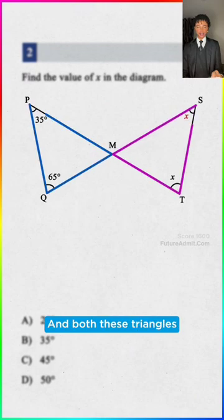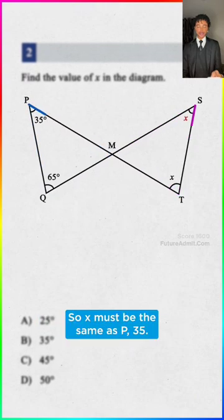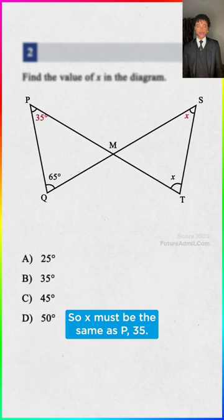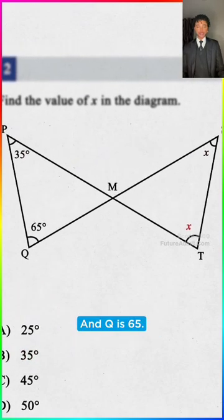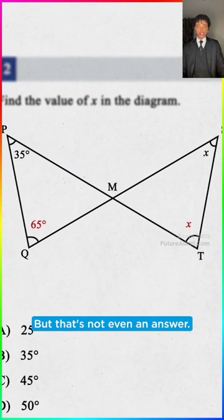Look, we got an x up here, and both these triangles look the same, like a mirror, so x must be the same as p. 35, it's p! Wait, there's also an x down here, and q is 65, but that's not even an answer.